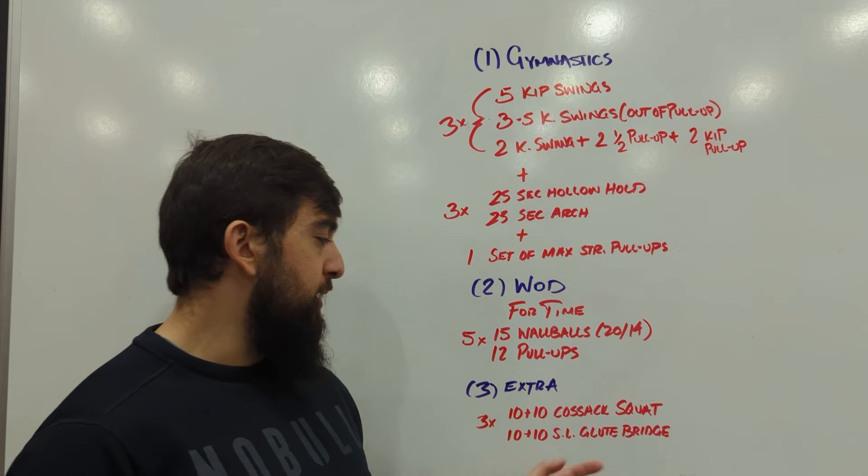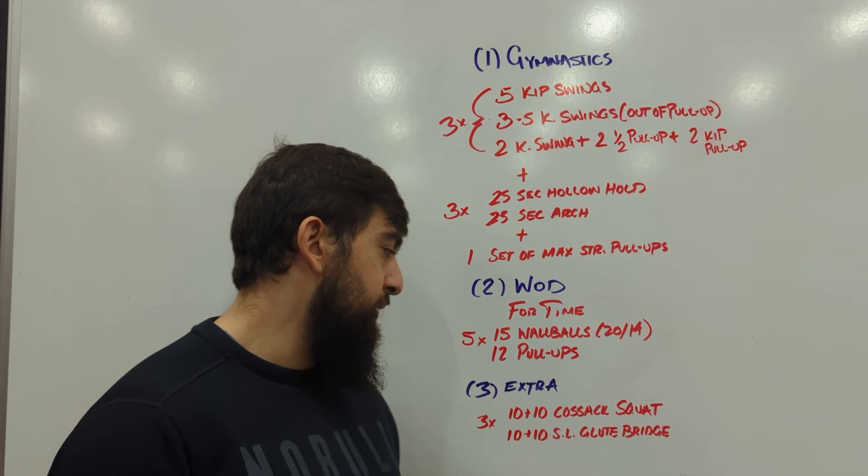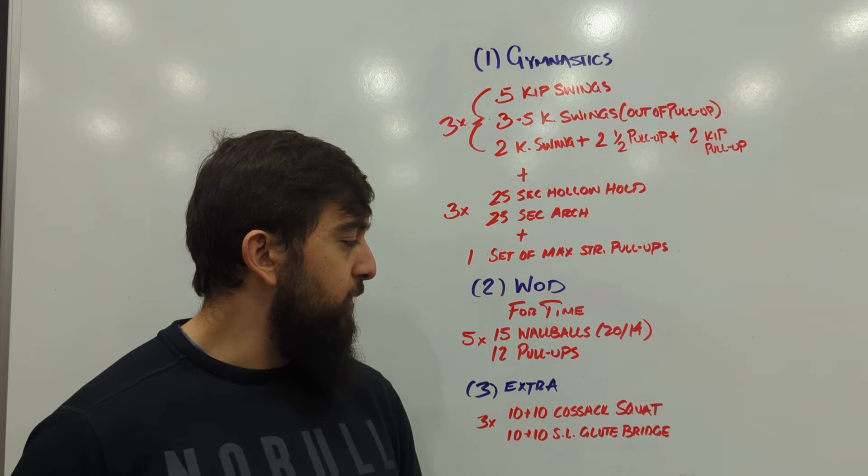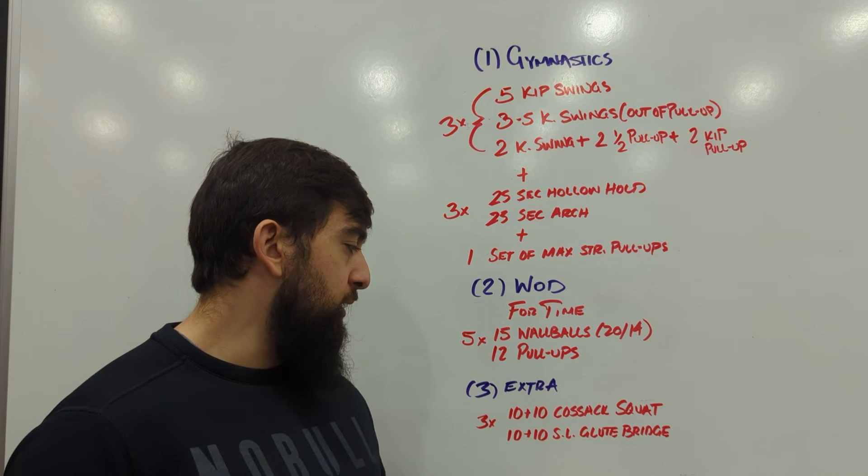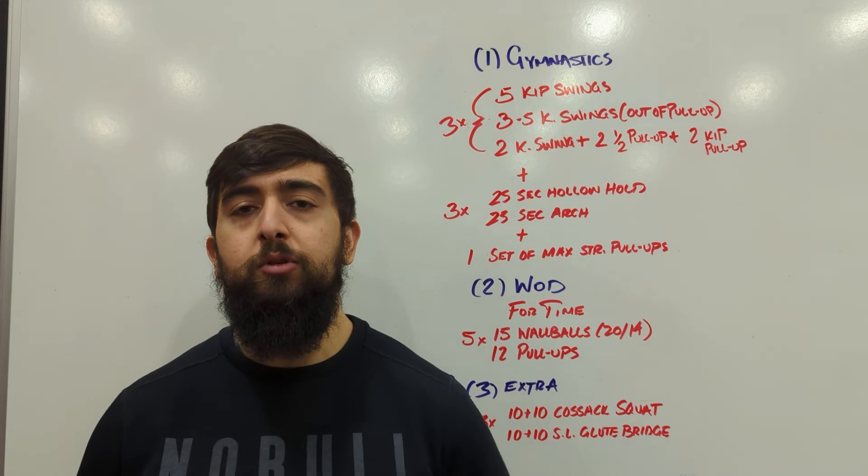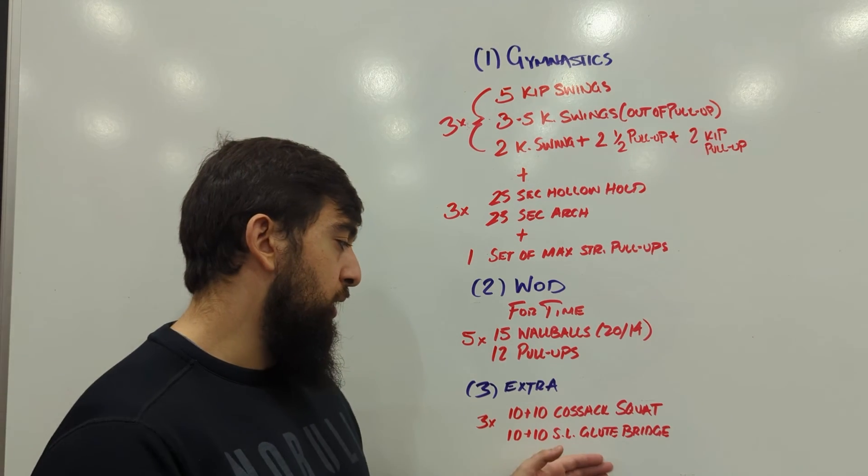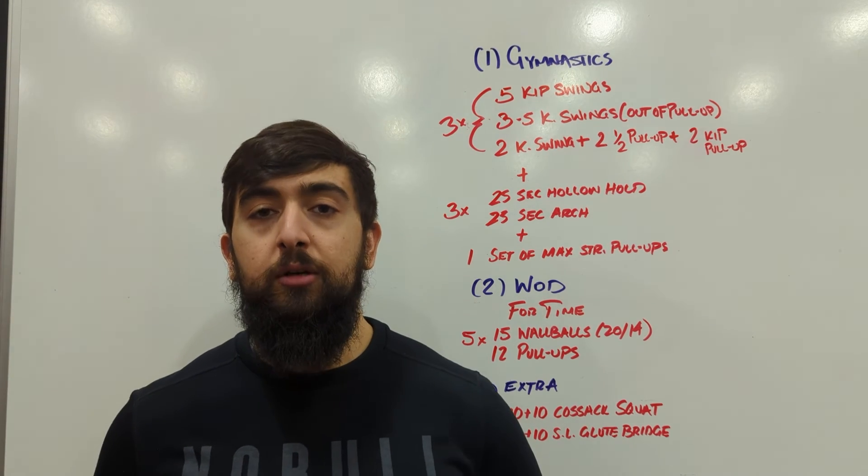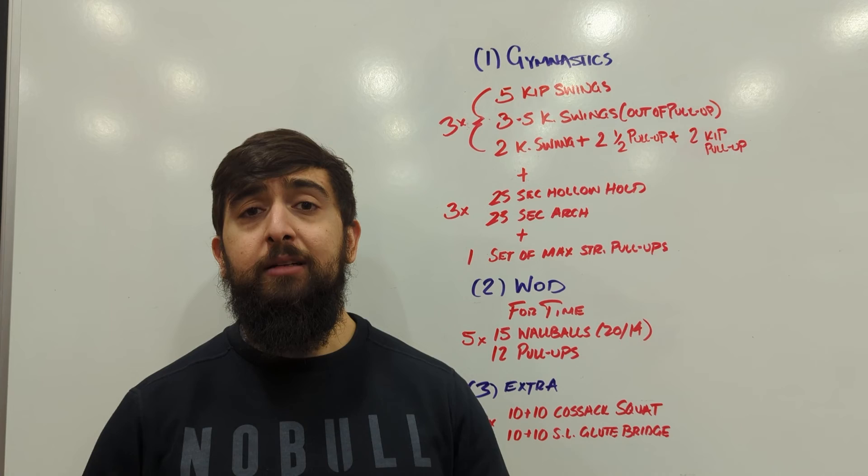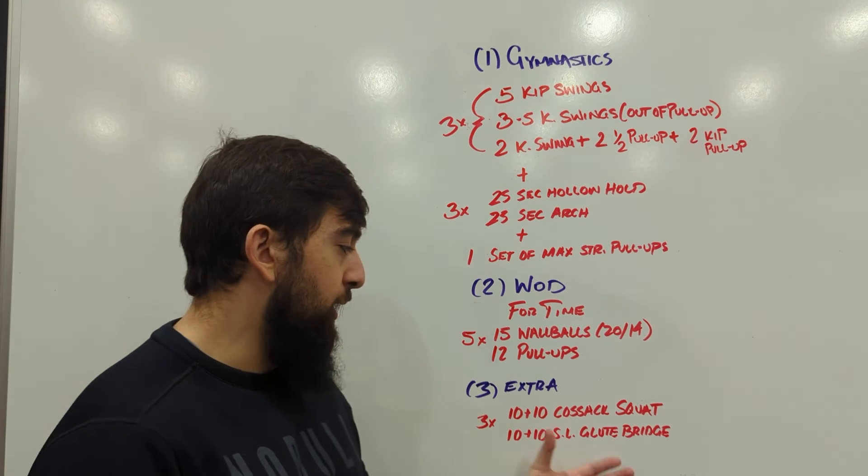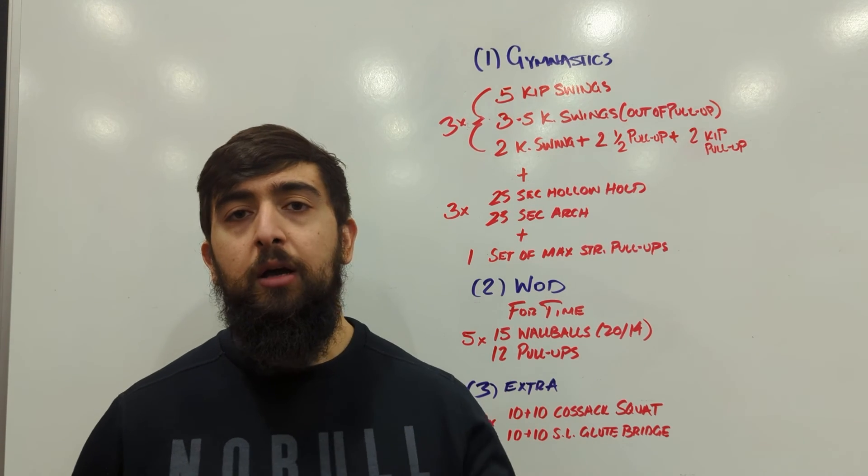Extras, lower body work, doing 10 and 10 cossack squats and then 10 and 10 single-legged glute bridges. Working on that groin and abductor and then also working on hamstring and glute activation with the single-legged glute bridge. If you're looking to fix some imbalances in your lower body, this is a great way to do it since we're working on unilateral work instead of working just on both legs at the same time.